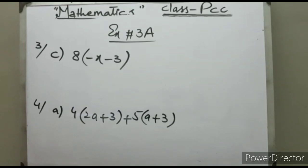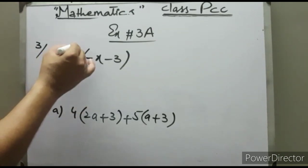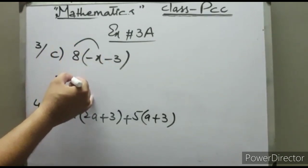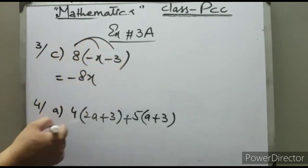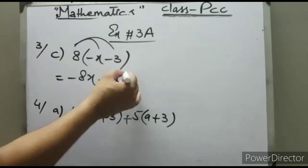Now students, see one more question from question number 3 part C. First of all, 8 will be multiplied by -x, this will be -8x, and then 8 multiplied by 3, this will be -24.